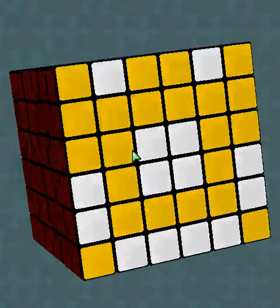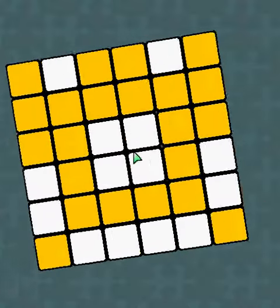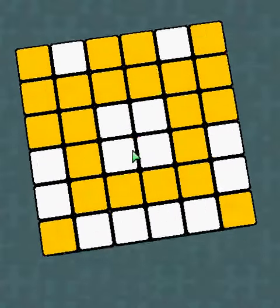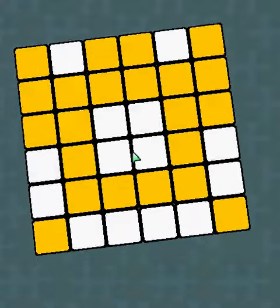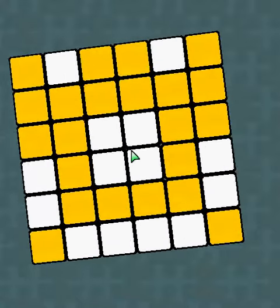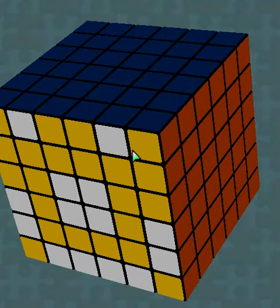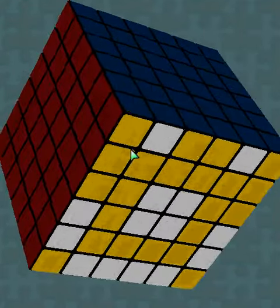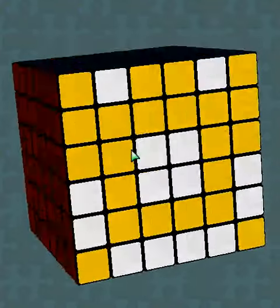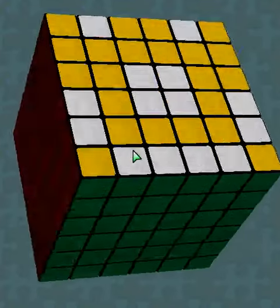Now do a 180 degree turn of the front yellow layer and do the same moves except you won't have to do the last one. There, now just rotate the front layer again, and you've got the top part of the smile.